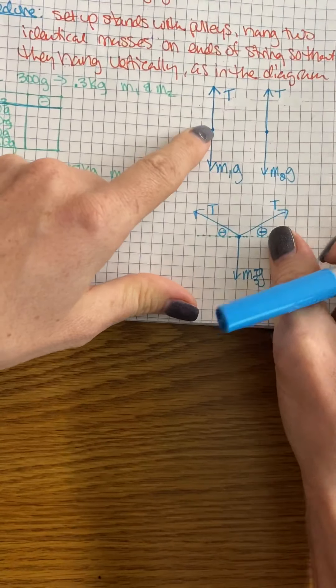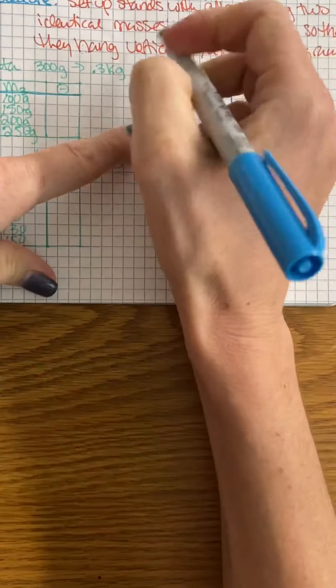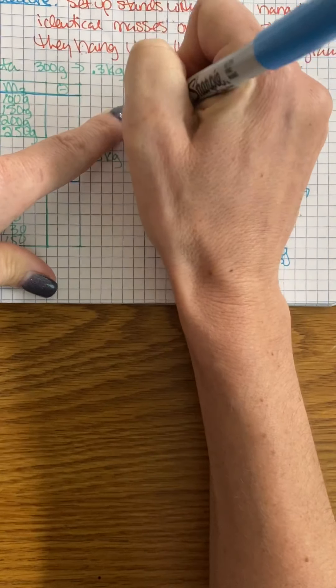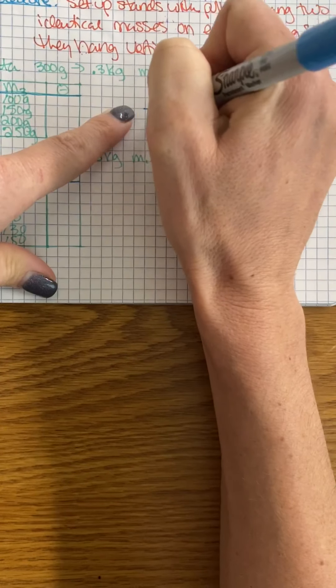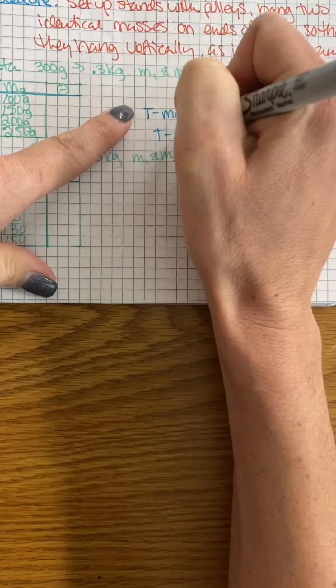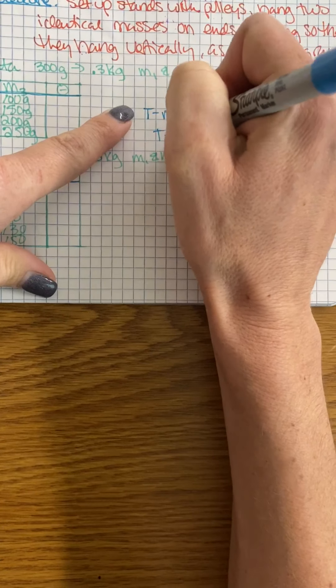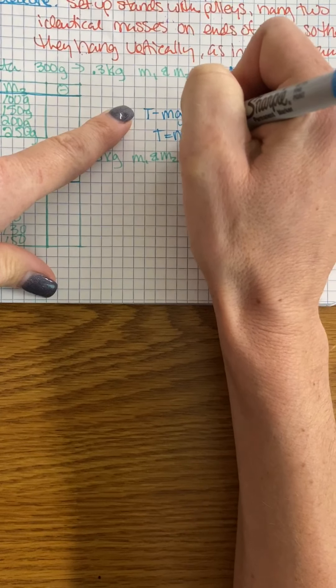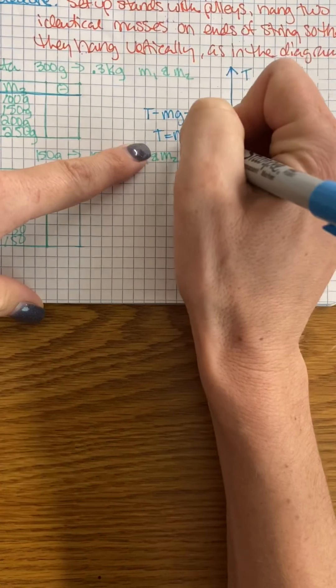When I sum my forces, for these guys are easy—it's just T minus Mg equals zero, so my tension is equal to Mg here, one or two. And then my sum of forces here...